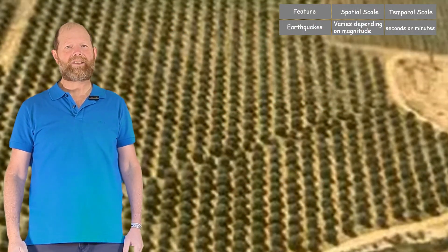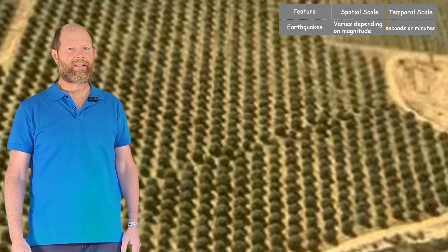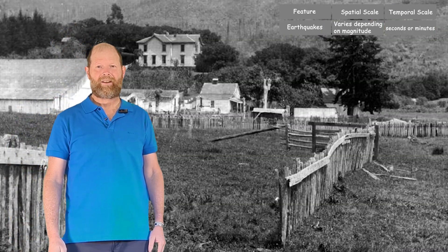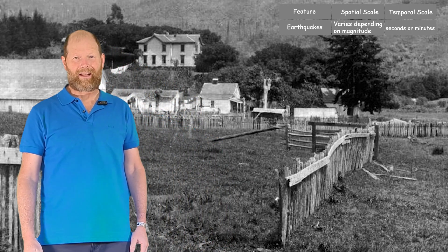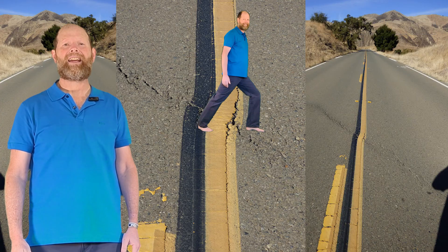This creates places where we can see the features of the surface of the crust have been shifted or become offset. Once the rock has broken and shifted, we call that a fault.